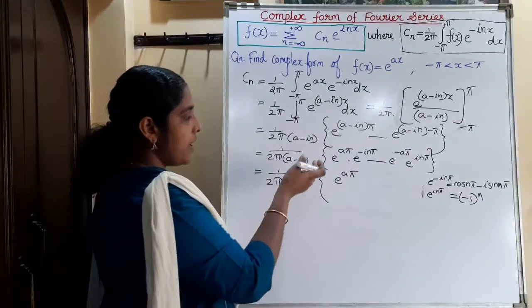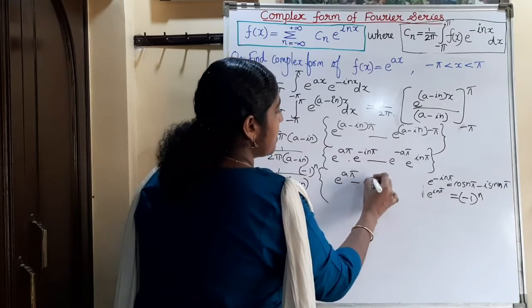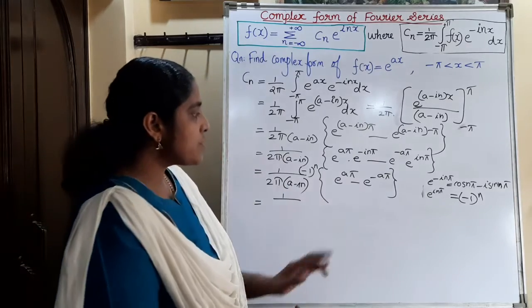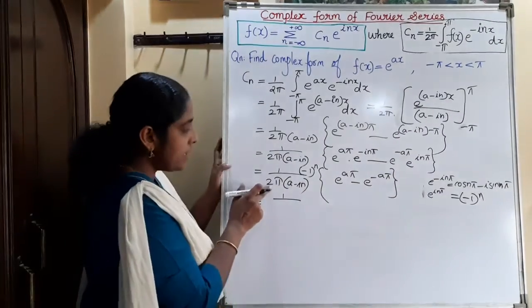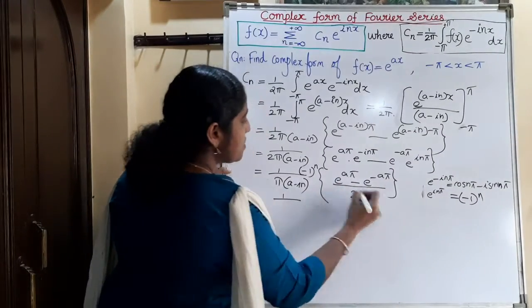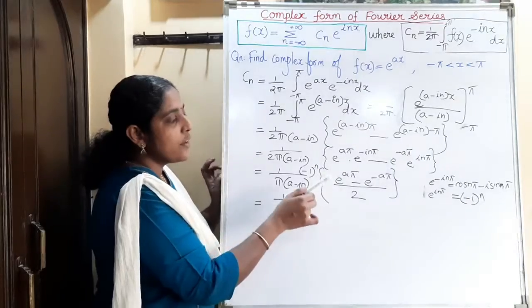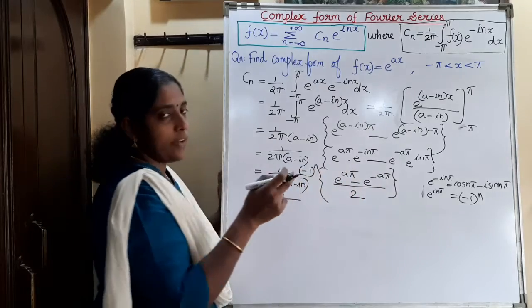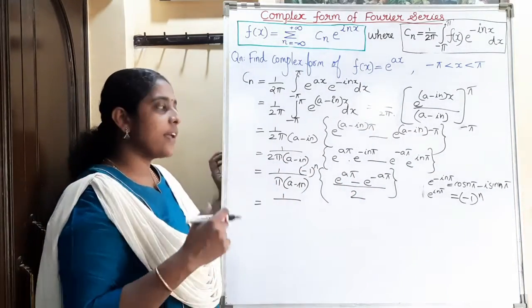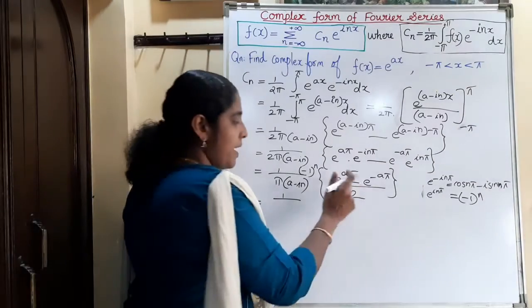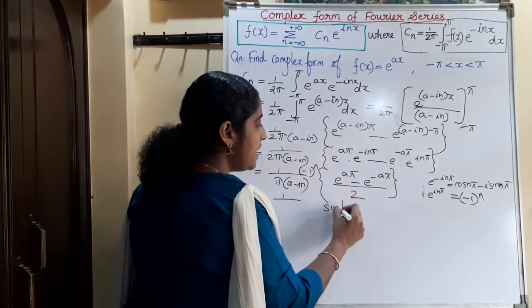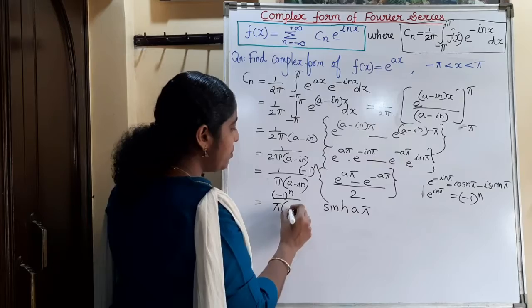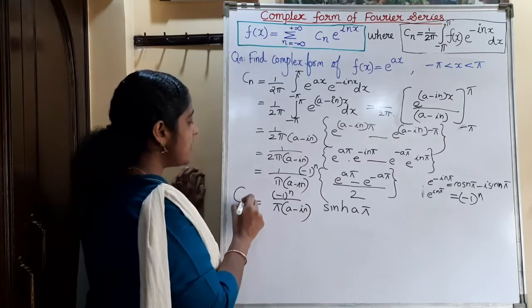Taking (-1)^n outside, we have e^(aπ) - e^(-aπ), and with the factor of 2 this gives sinh(aπ), since sinh(aπ) = (e^(aπ) - e^(-aπ))/2. So cn = (-1)^n · sinh(aπ) / (π(a - in)). Therefore the complex form is f(x) = Σ(n=-∞ to +∞) cn·e^(inx).